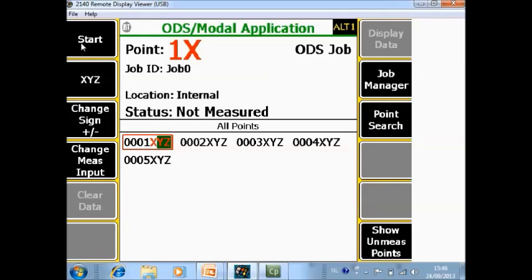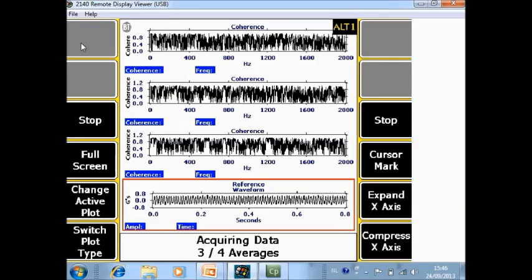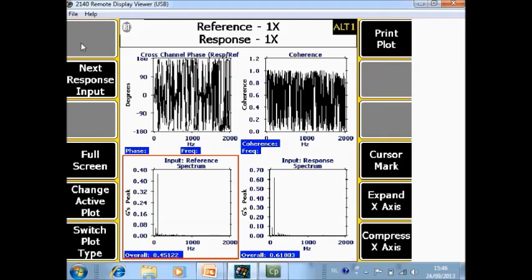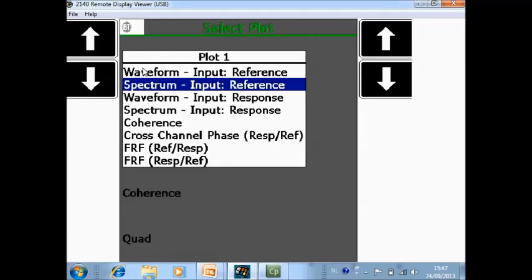I simply push start to collect the data and the data is collected. And you see the reference 1 with the response on 1, you see the spectrum, the reference, the response, the coherence plot and the phase plot. And as you see everywhere you can select the waveform and the spectrum of the reference, the waveform and the spectrum of the response, the coherence plot, the phase plot and the transfer functions in both directions.